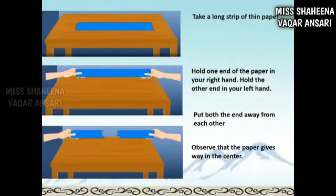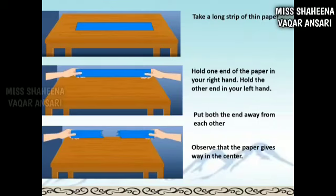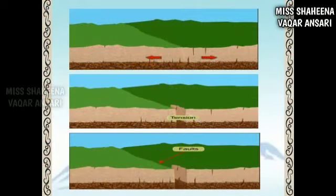Here is another activity. Take a long strip of thin paper, hold one end in your right hand and the other end in your left hand, then pull both ends away from each other. Observe that the paper gives away in the center — that is tension — and the paper tears apart. This work is called tension.